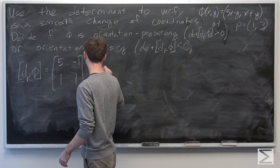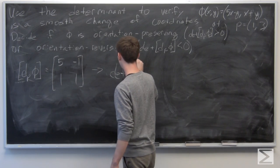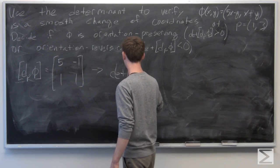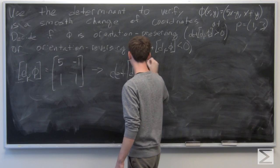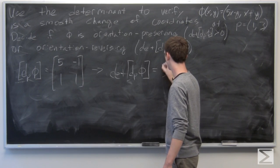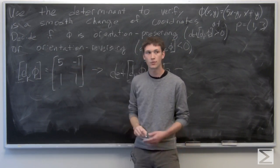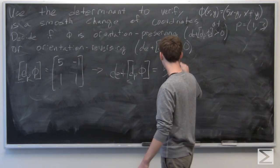which is 5 times 1, equals 5, minus 1 times negative 1, which is negative 1. So that's plus 1,